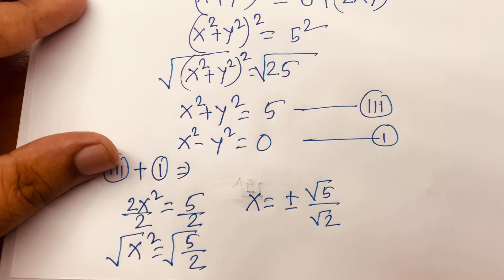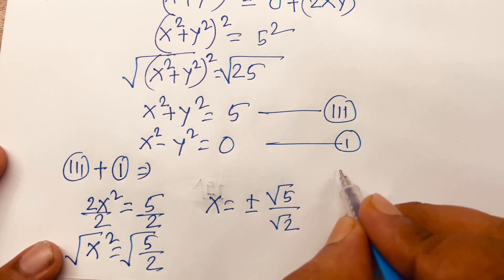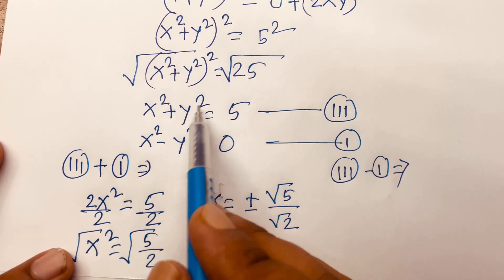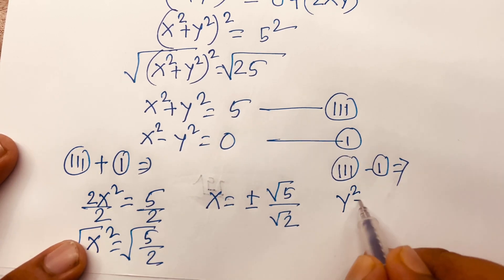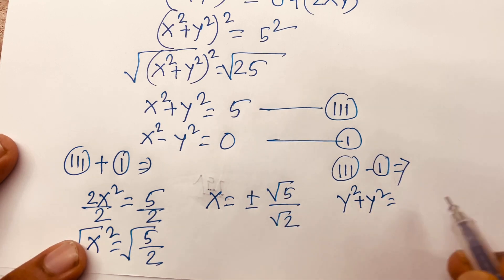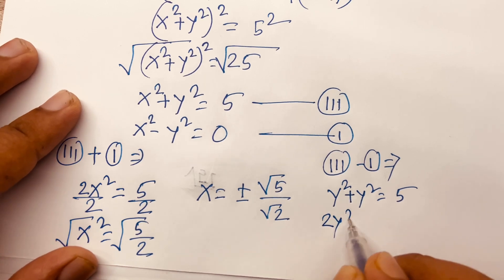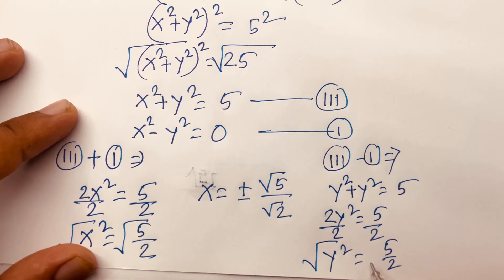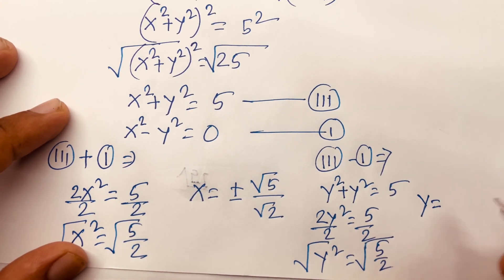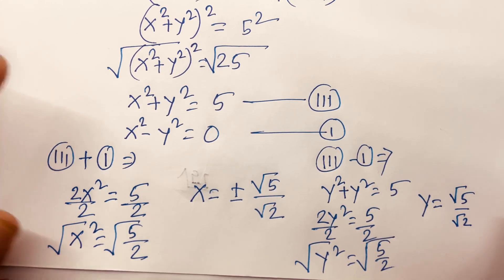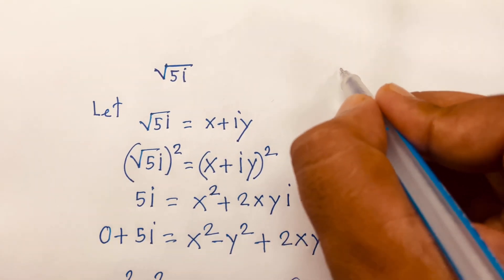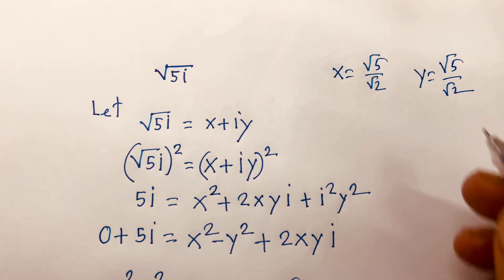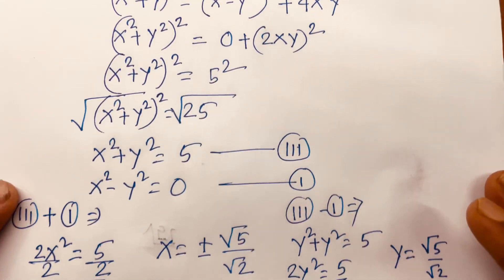Subtracting equation 1 from equation 3: (x² + y²) − (x² − y²) = 5 − 0, so 2y² = 5, giving y² = 5/2. Taking the square root, y = ±√5 / √2. So both x and y equal ±√5 / √2.